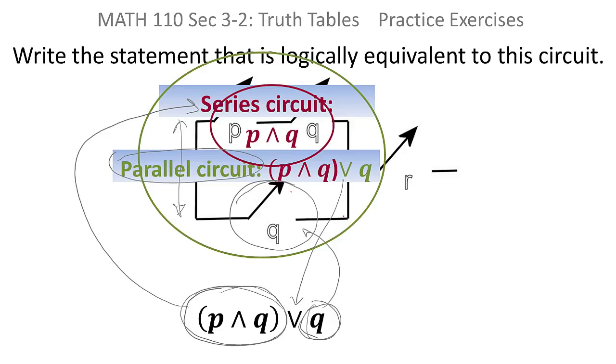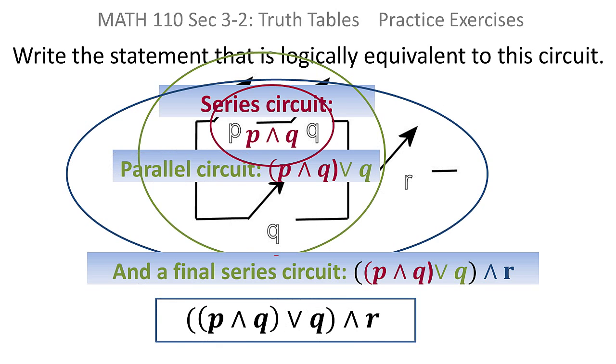And the only thing left to deal with is this OR, which is sitting in a row with everything else. So here is everything else. The R is sitting on a row with it, so that is a series circuit.